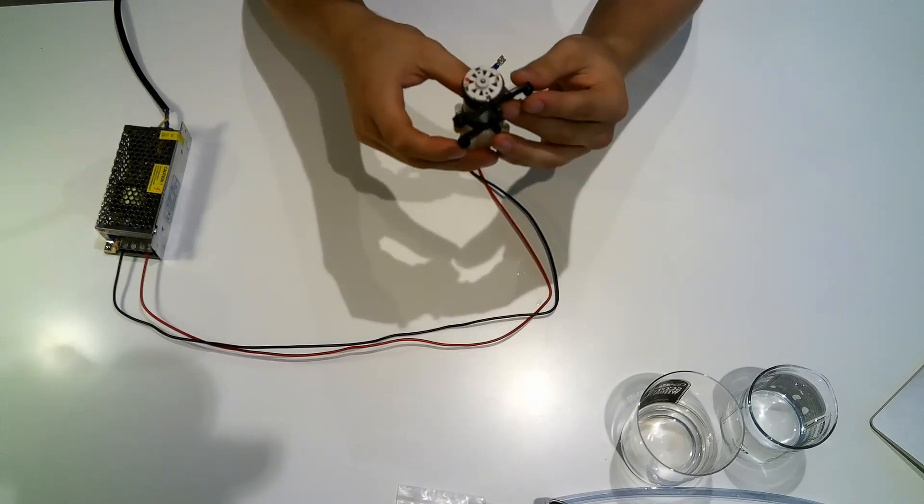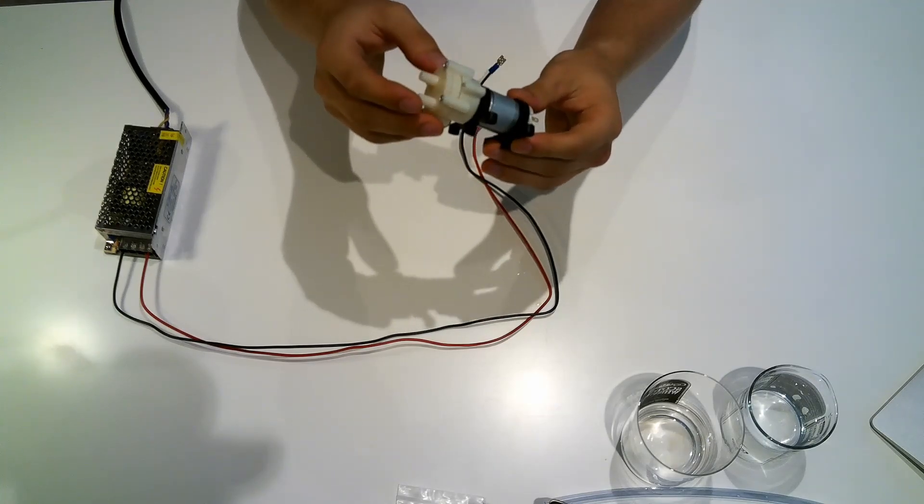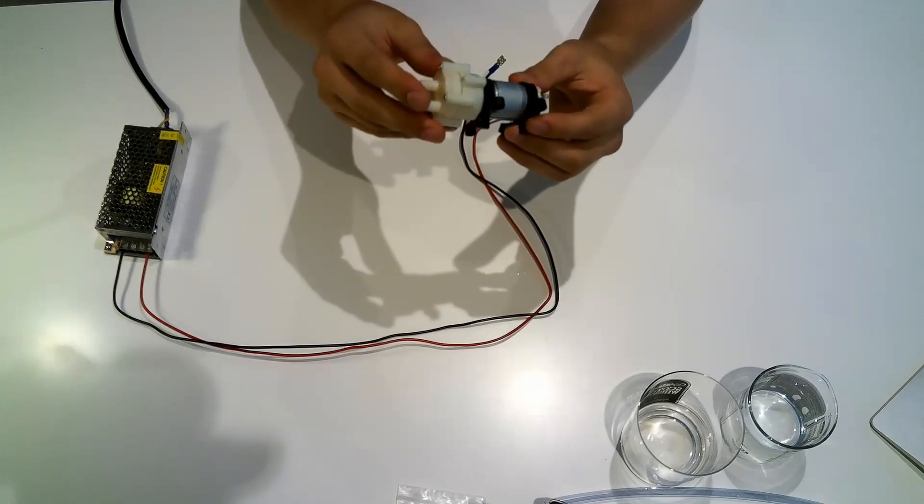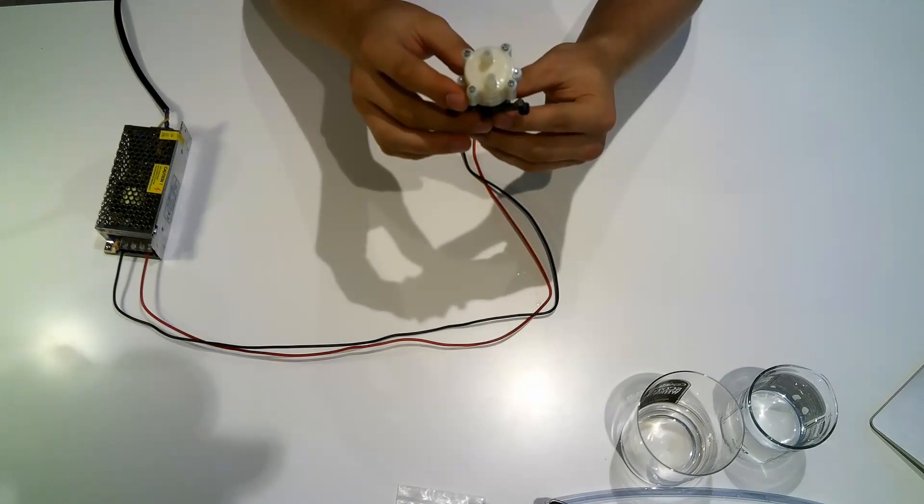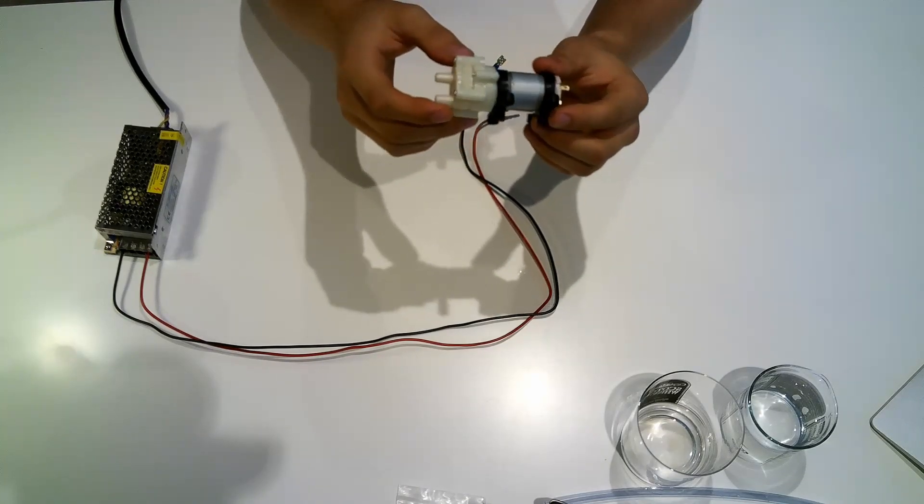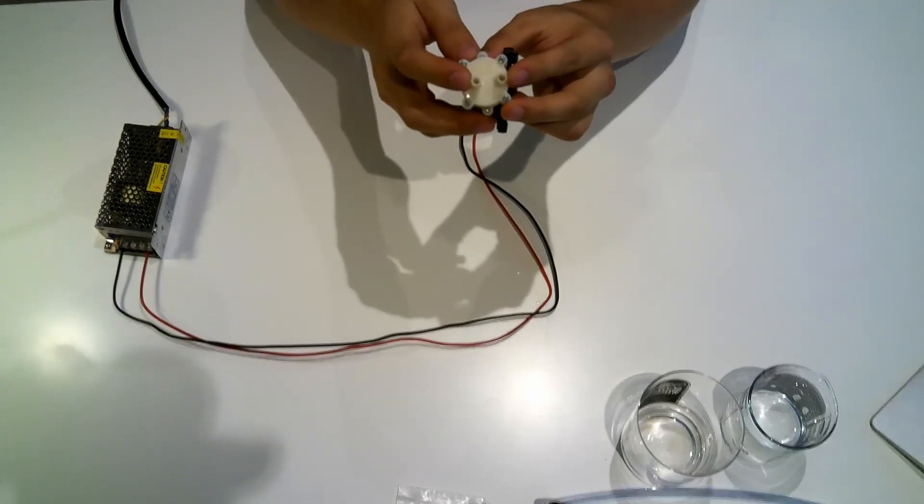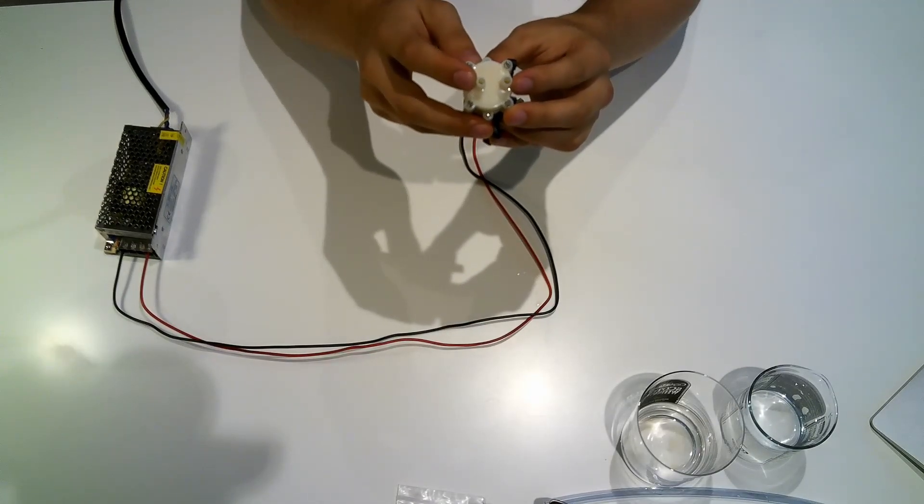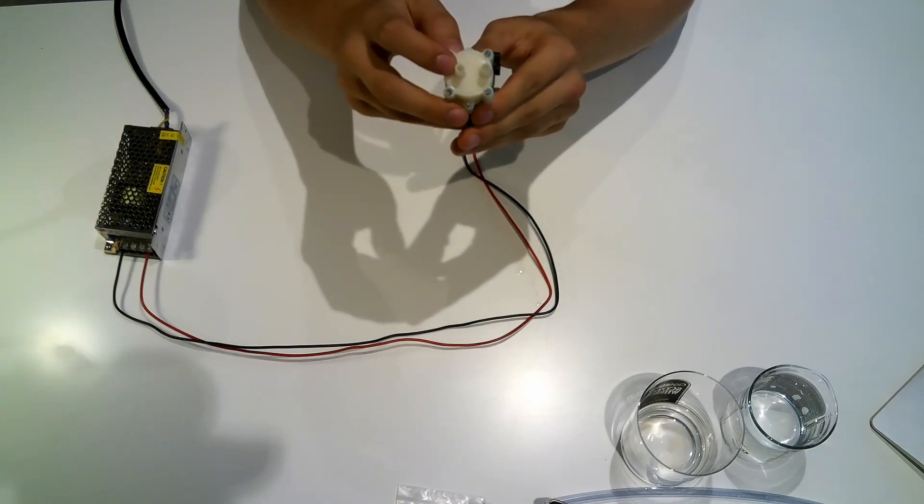It's driven by 12-volt direct current and draws a current of 0.5 to 0.7 amperes when working. It has a maximum suction capacity height of 2 meters. Like all pumps, it has an outlet and an inlet here. The inner diameter of the outlets are 6 millimeters and the outer diameter is 9 millimeters.